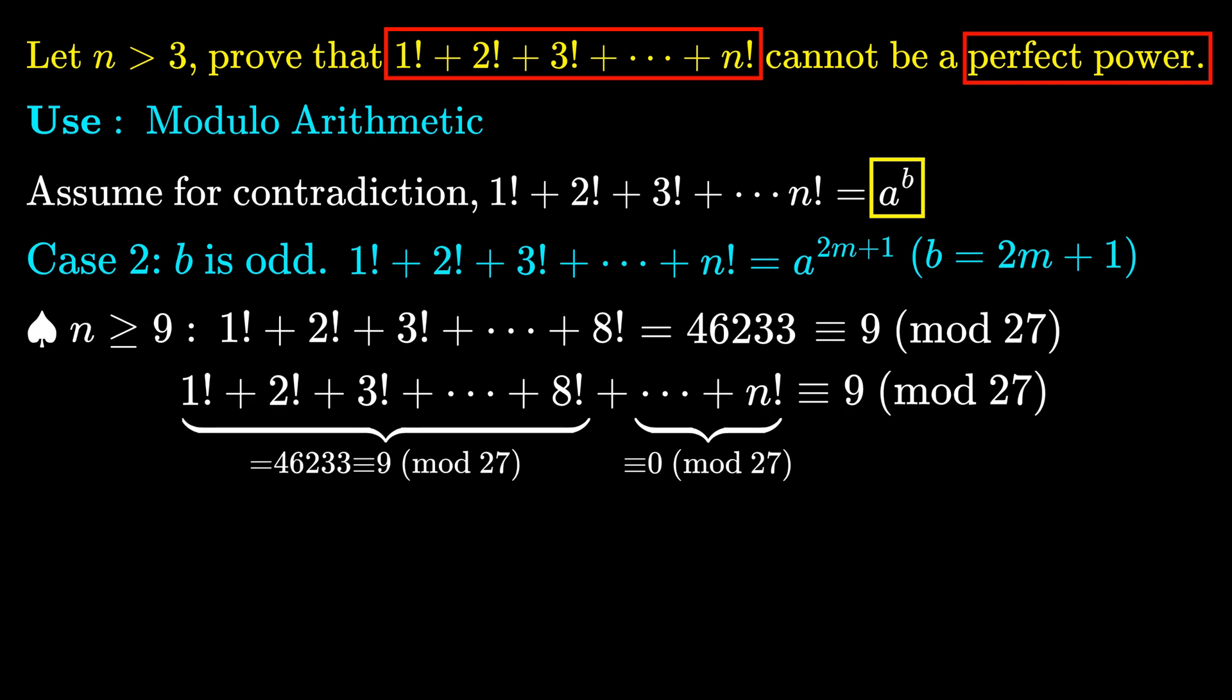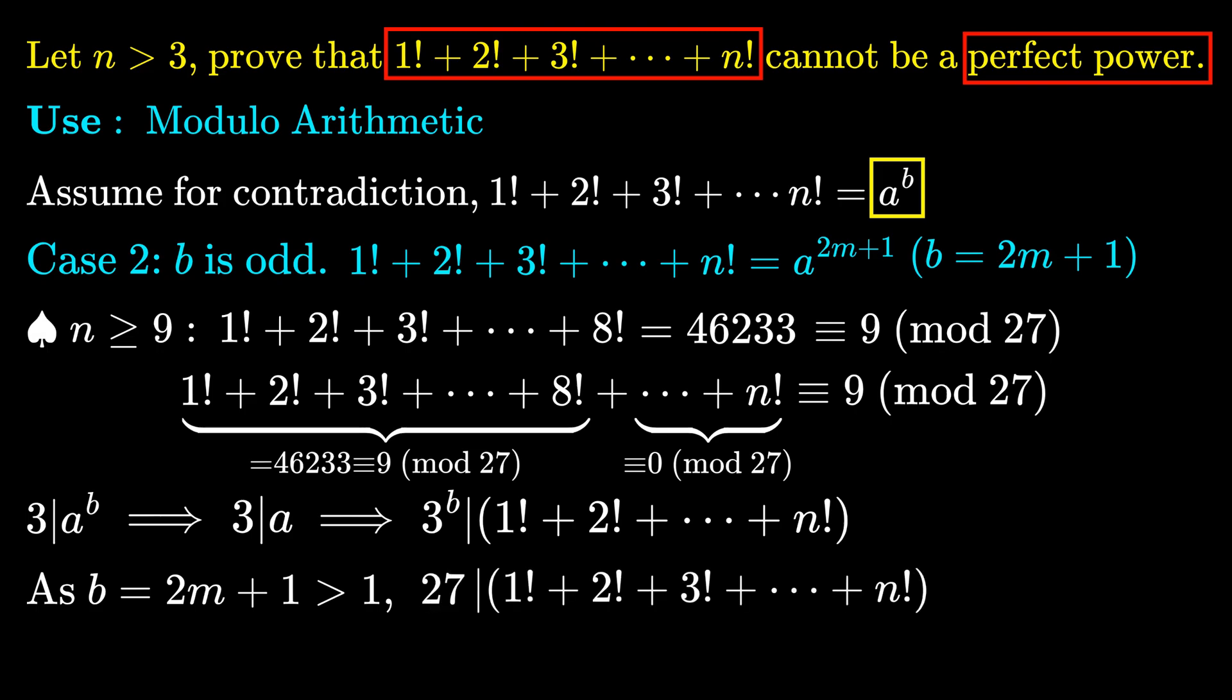However, here is the problem. Since 3 divides the sum, this gives 3 divides a, which gives 3^b divides the sum. Because b is an odd integer greater than 1, we have 3^3 = 27 divides the sum. This means the sum is congruent to 0 mod 27, which is a contradiction since we showed it is congruent to 9 mod 27.